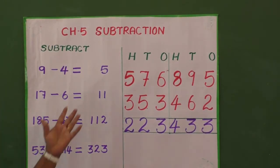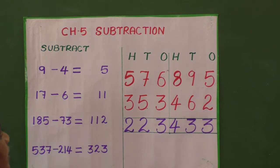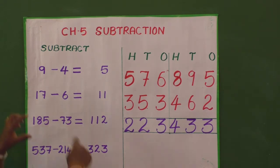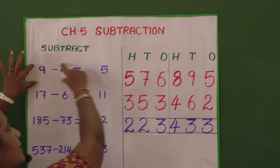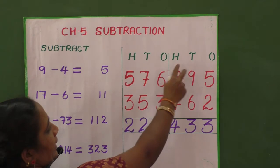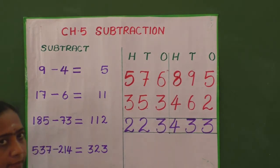Today we are going to see chapter 5, subtraction. First, they gave horizontal type subtraction. Horizontal means like this way — this is called horizontal subtraction. And this one is called vertical method, vertical subtraction.